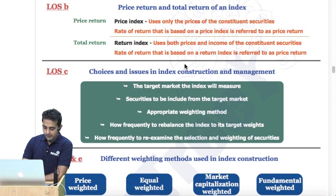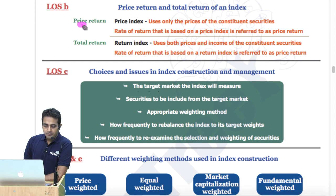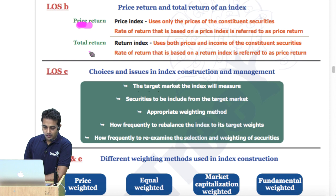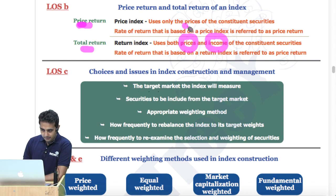Learning outcome B: price return and total return of the index. In price return, we just consider capital appreciation. Whereas in total return, we consider prices as well as income, which would be dividends. So here just the prices, and here prices and income.